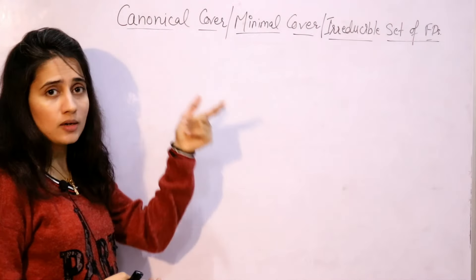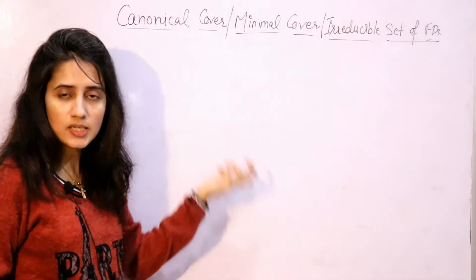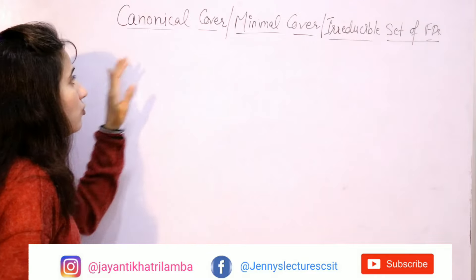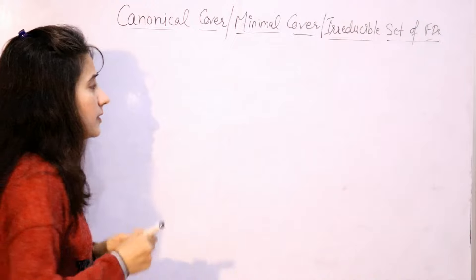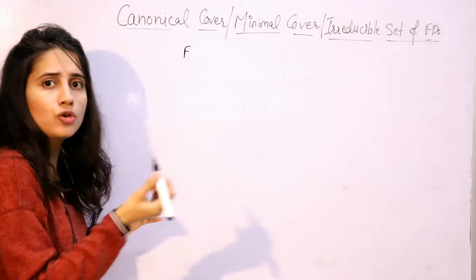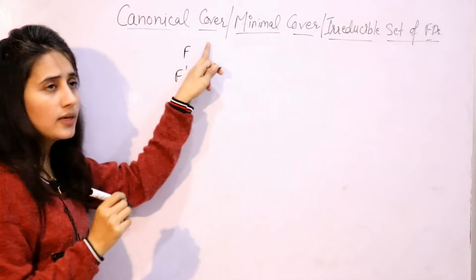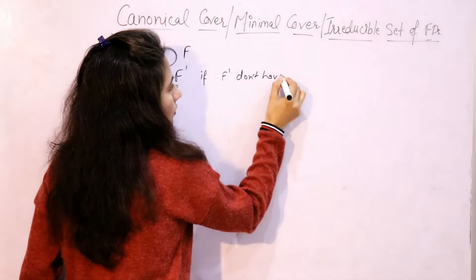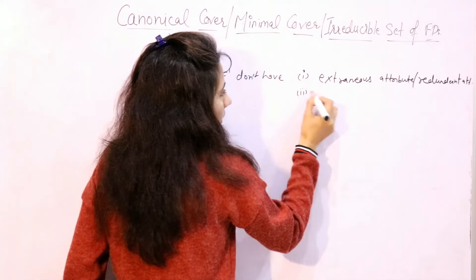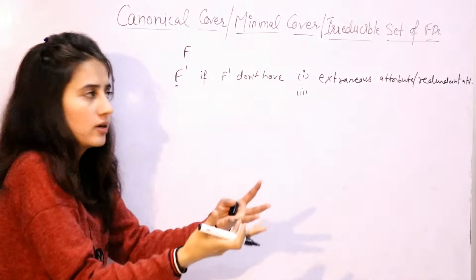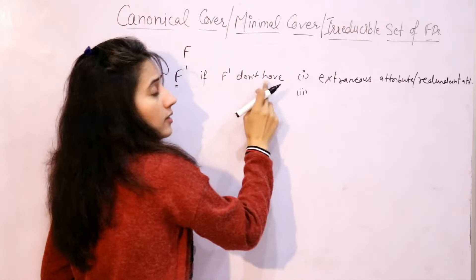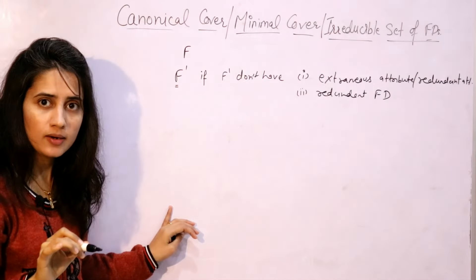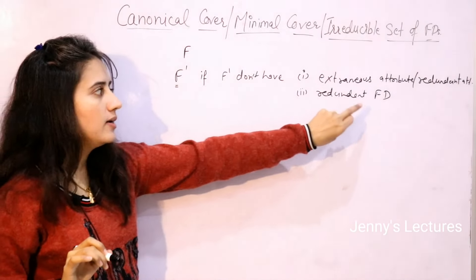There may be a question: find out the canonical cover, or minimal cover, or irreducible set of functional dependencies — they'll give a set of functional dependencies and four options would be given. So you have to find out that thing. If a functional dependency set F is given, F' is the canonical cover of this functional dependency set if F' does not have extraneous attributes — that is, extra or redundant attributes — and it does not have redundant functional dependencies.